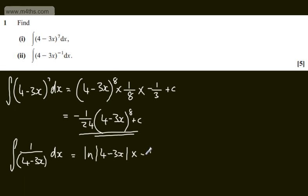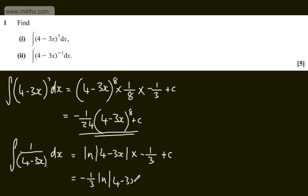That's the same as multiplying by 1 over minus 3, and then adding a constant of integration. Tidying this up, we'll have minus 1 third times the natural log of the modulus of 4 minus 3x plus our constant of integration. So that's the second part done, and there were five marks in total for question 1.